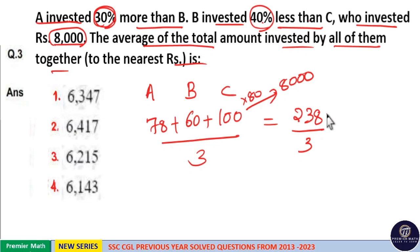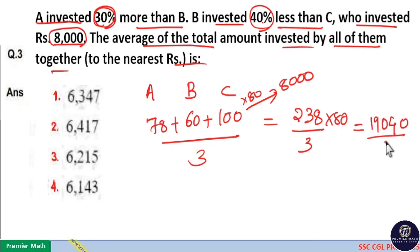So 1 part is 80 means 238 into 80. This is equal to 8 into 8, which is 64. 8 into 3, 24 plus 6 is 30. 8 into 2, 16 plus 3 is 19, divided by 3.